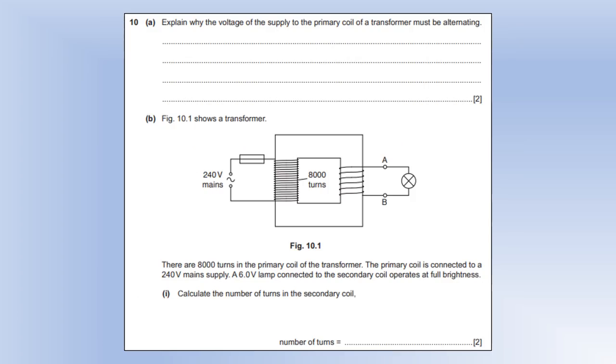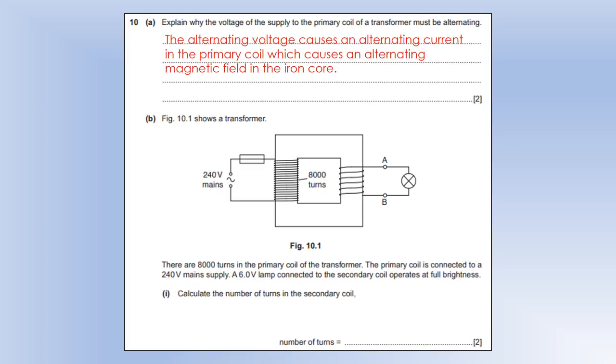So explain why the voltage of a power supply to the primary coil of a transformer must be alternating. Well we need the voltage to be alternating because we need an alternating current in the primary coil and we need an alternating current because we need an alternating magnetic field in the iron core. So if we have an alternating magnetic field, that field is going to be cutting through the secondary coil and that's going to induce an EMF in the secondary coil and that's going to cause a current to flow and it's going to cause a current to flow fairly continuously in that secondary coil.